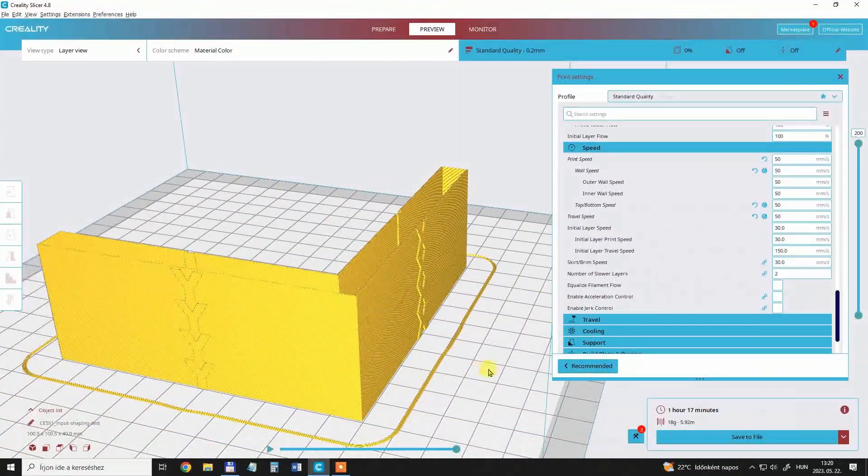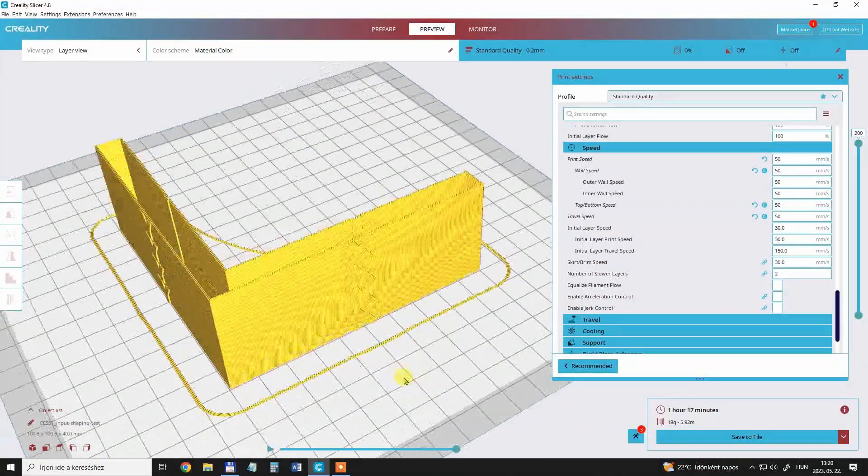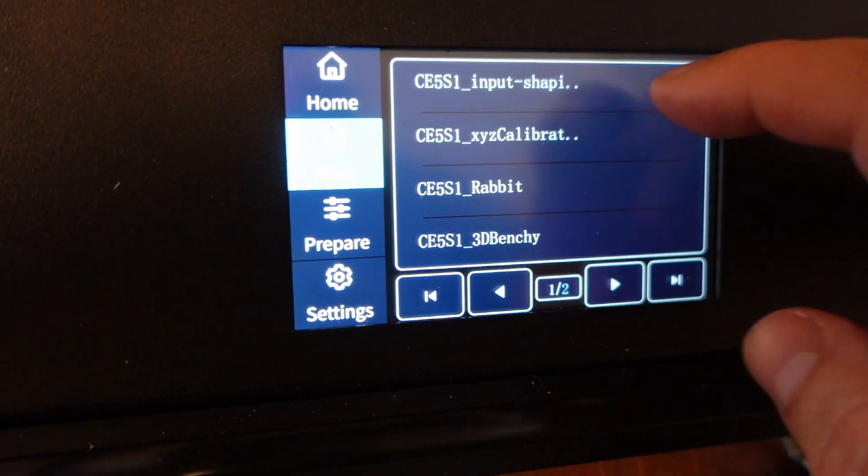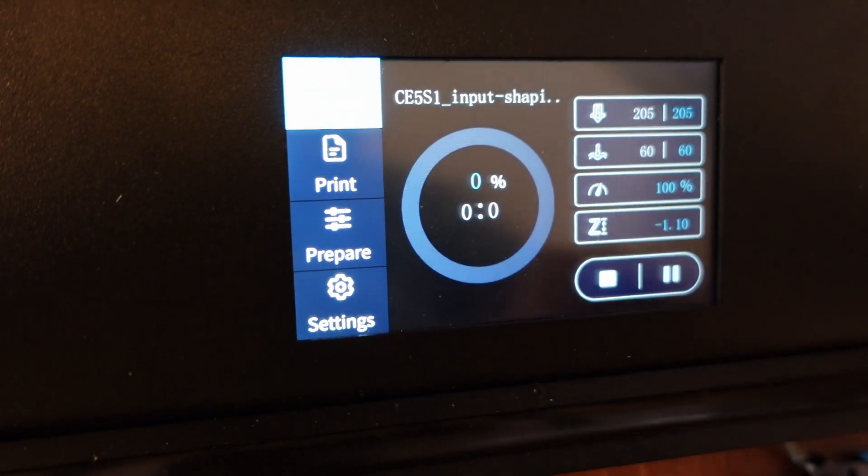My next printing will be some kind of input shaping test. I have this object and I want to increase the speed every 10 millimeters. The difference is 50 millimeters per second, then 200, 300 and 400%, which means 200 millimeters per second at the end. I'm starting with the printing here.